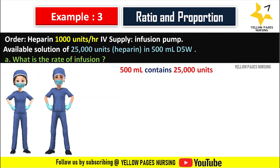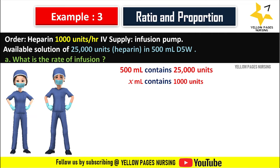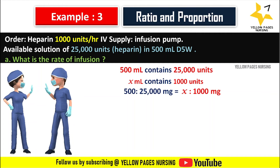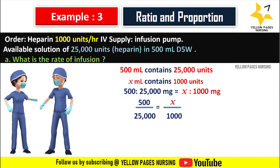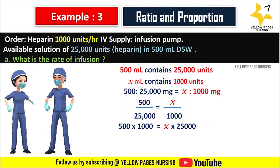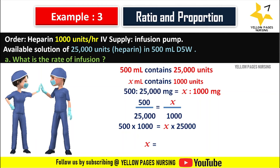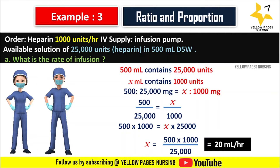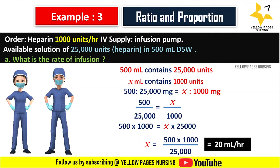500 ml contains 25,000 units; x ml contains 1,000 units. So 500 is to 25,000 units as x is to 1,000 units. Cross-multiplying each side, we get 500 × 1,000 = x × 25,000. So x equals 500 × 1,000 ÷ 25,000, which equals 20 ml per hour. We set 20 ml per hour in the infusion pump.